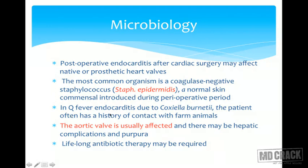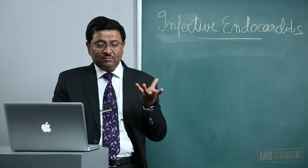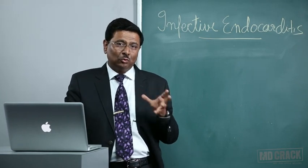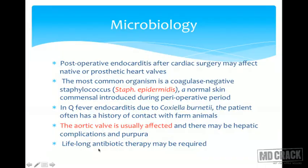In Q fever endocarditis due to Coxiella, the patient often has a history of contact with farm animals. The aortic valve is usually affected and there may be hepatic complications and purpura. For postoperative endocarditis, the two key MCQ points are: the causative organism is coagulase-negative staphylococcus, and the most commonly affected valve is the aortic valve. Lifelong antibiotic therapy may be required.